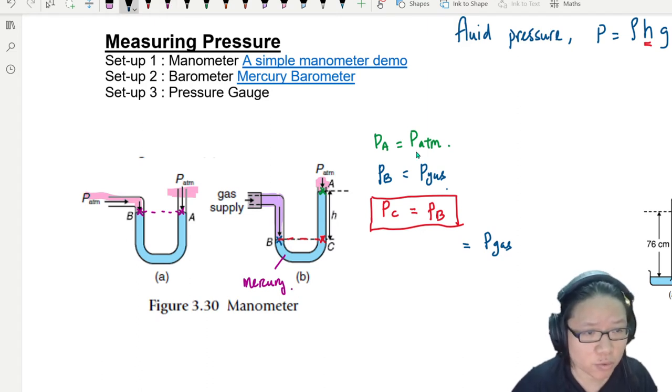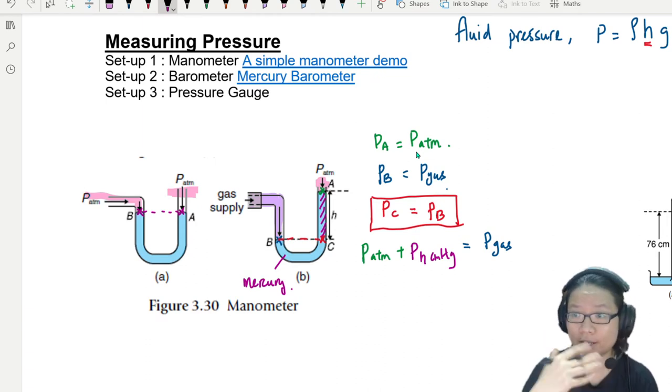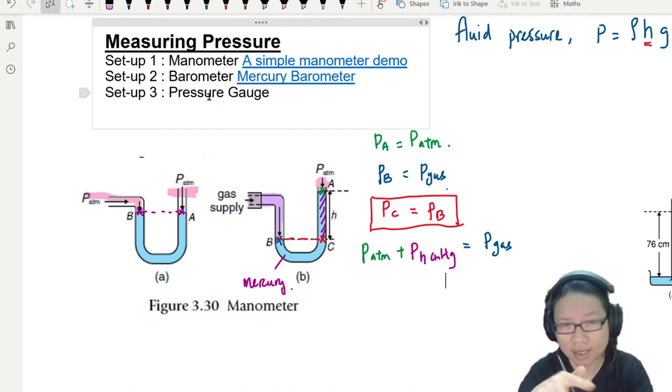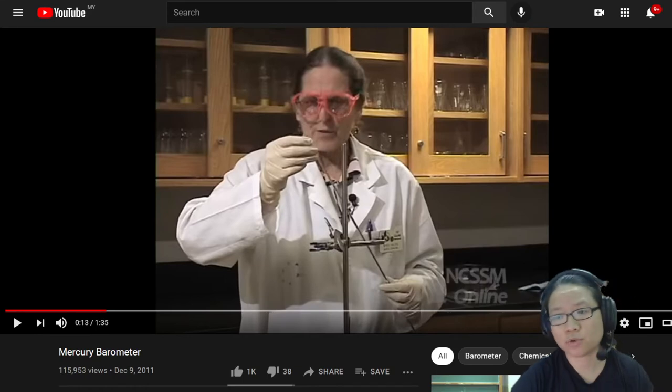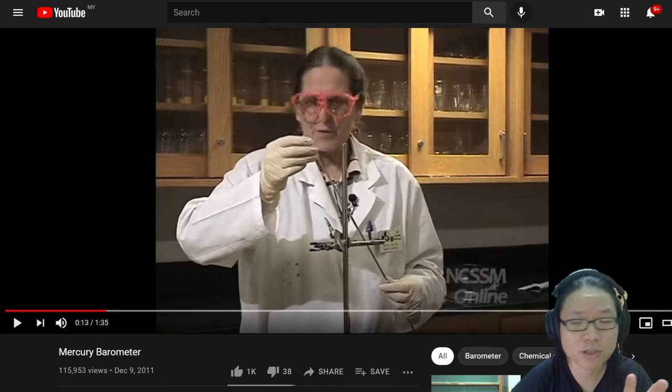So at C, we will have pressure of atmosphere as always, because it's open-ended atmosphere, plus the pressure of this mercury column. Pressure of mercury. So always understand that we have the same level and then we will have the same pressure. And the next setup that we're going to look at is the barometer. The second way to measure gas pressure, but this is more specifically to the atmospheric pressure, is the barometer.